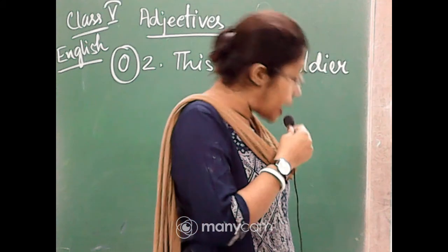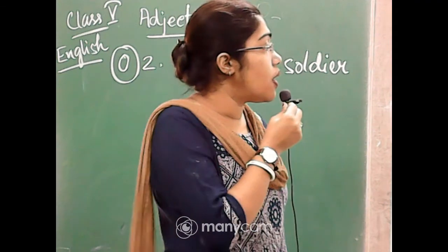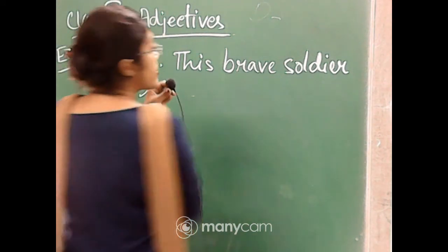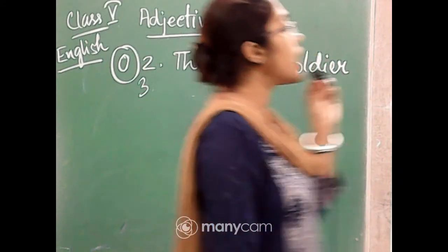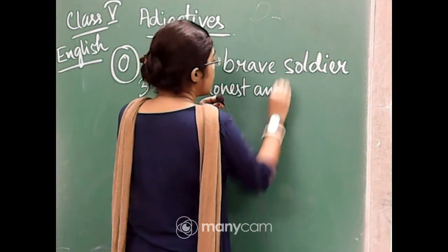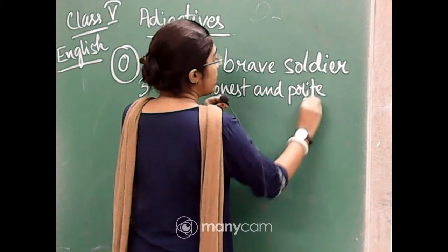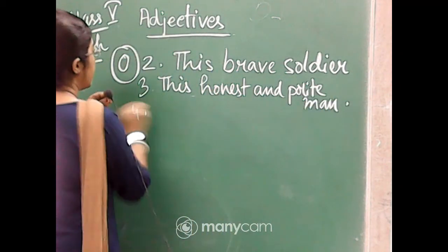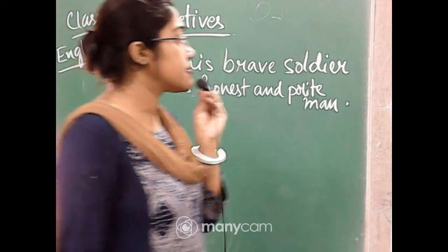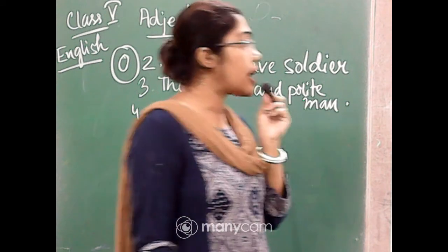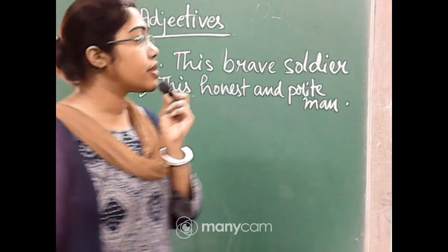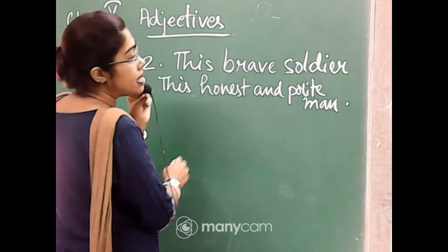Next one: 'these honest and polite men.' Number three answer: 'this honest and polite man.' Very good. Number four: 'those rare diamond rings.' Answer: 'that rare diamond ring.' Not 'rara' — that rare diamond ring. R-I-N-G.